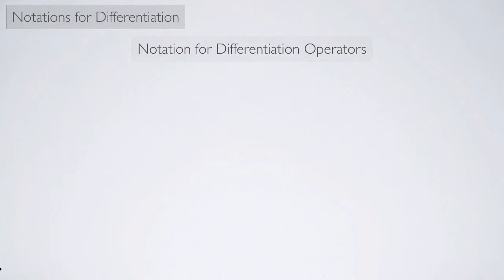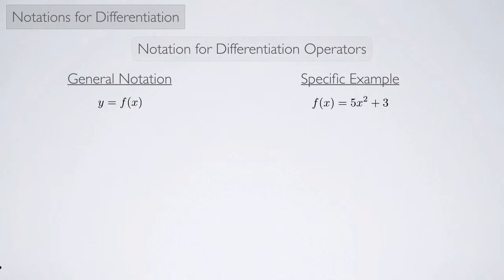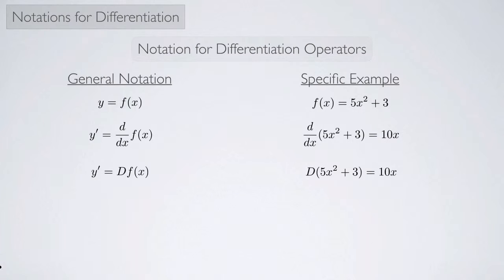Now here's notation for differentiation operators. The d/dx can be considered a differential operator — it's acting on a function. Another way to write it is with a capital D, called the differentiation operator, acting on f of x. So capital D acting on 5x squared plus 3 produces 10x. Sometimes you want to specify that x is the variable we're differentiating with respect to, so we write a subscript x on the capital D, and the specific example looks very similar with that small x subscript.